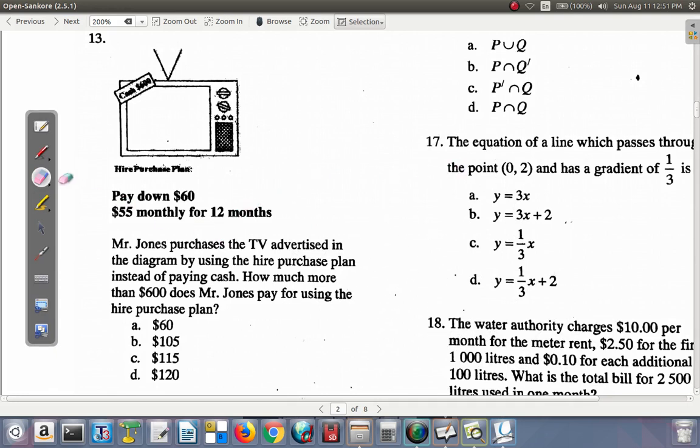Question 13 says you have a TV, cash $600, pay down $60, pay $55 monthly for 12 months. That's a hire purchase plan, or you could pay cash $600. Mr. Jones purchases the TV advertised in the diagram by using the hire purchase plan. How much more than the $600 does Mr. Jones pay for using the hire purchase plan?